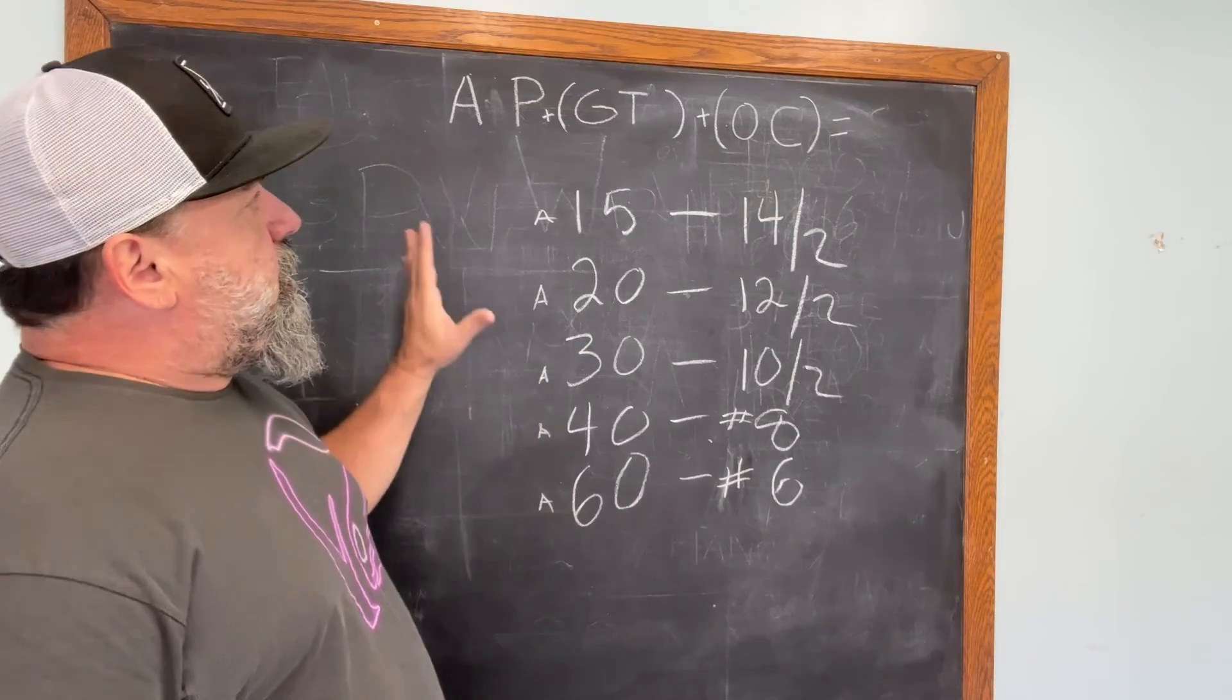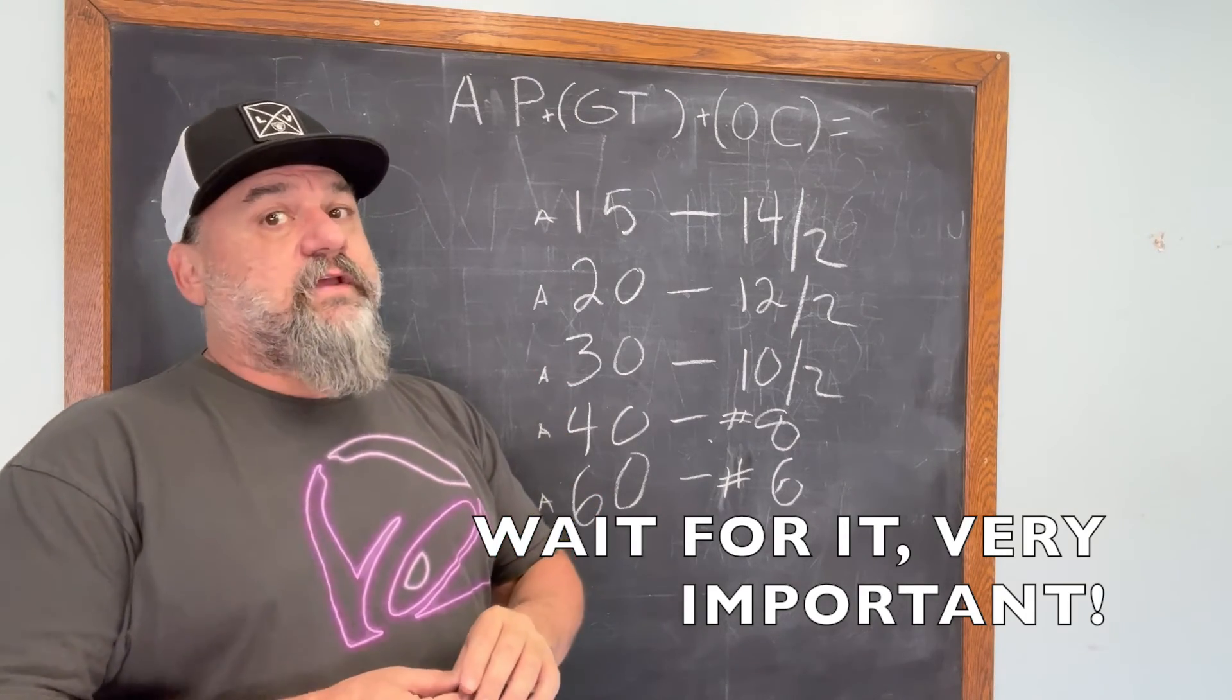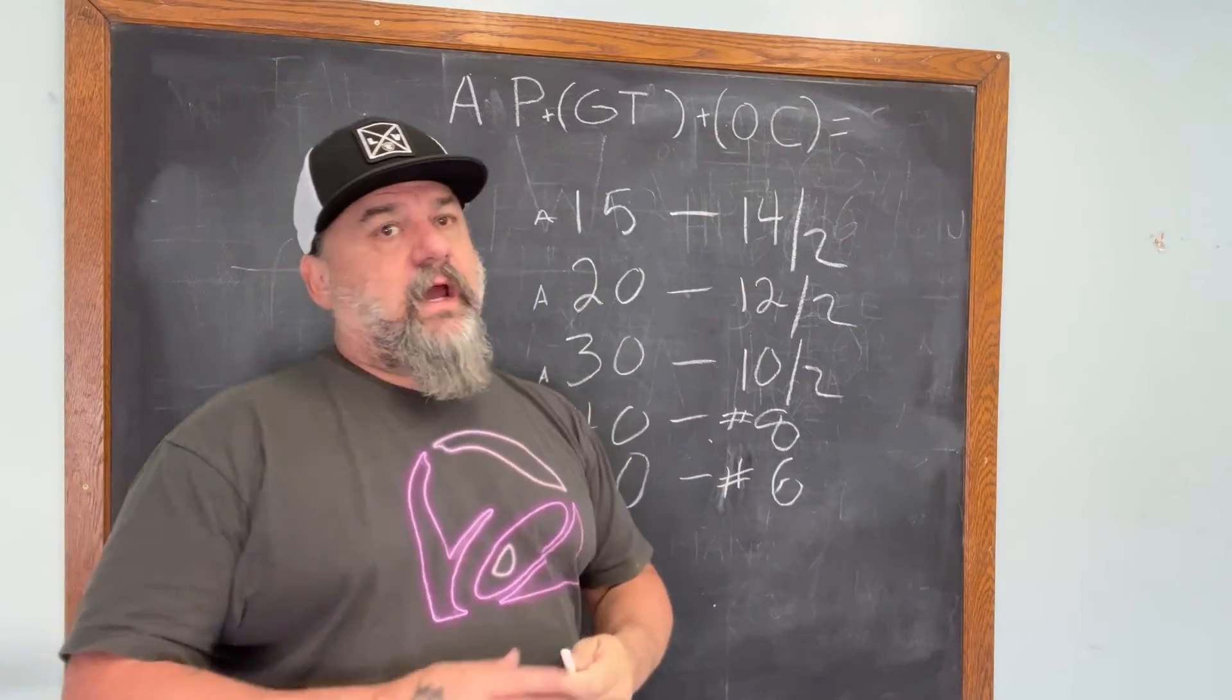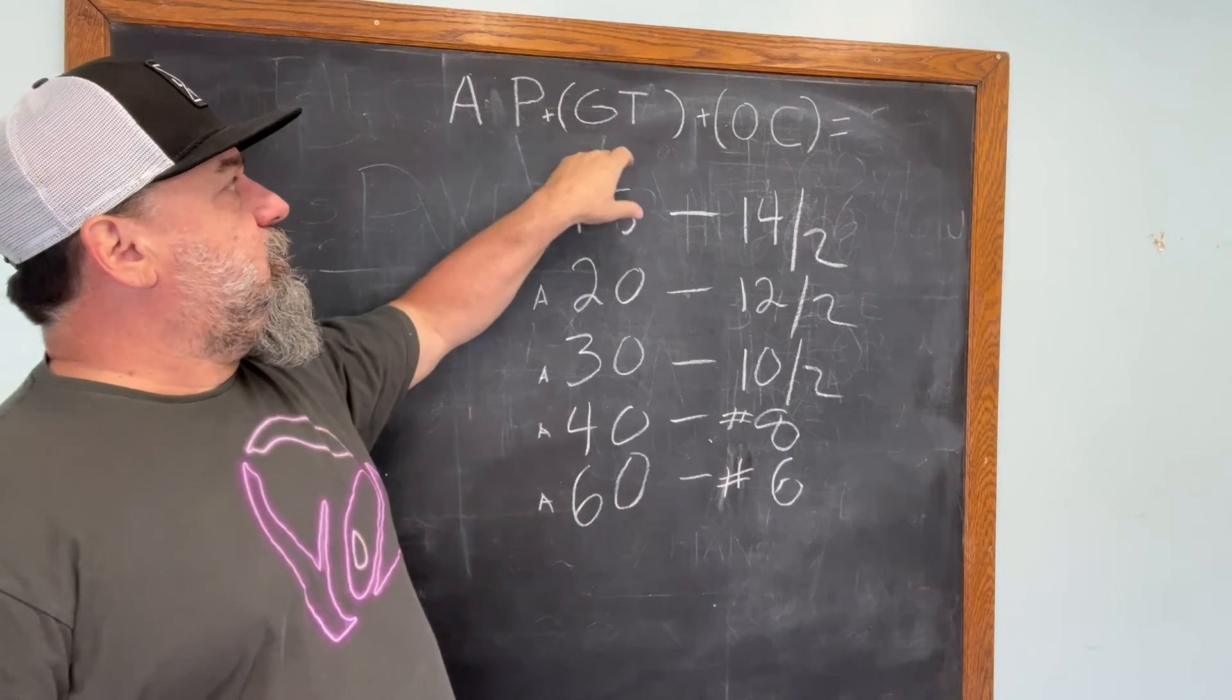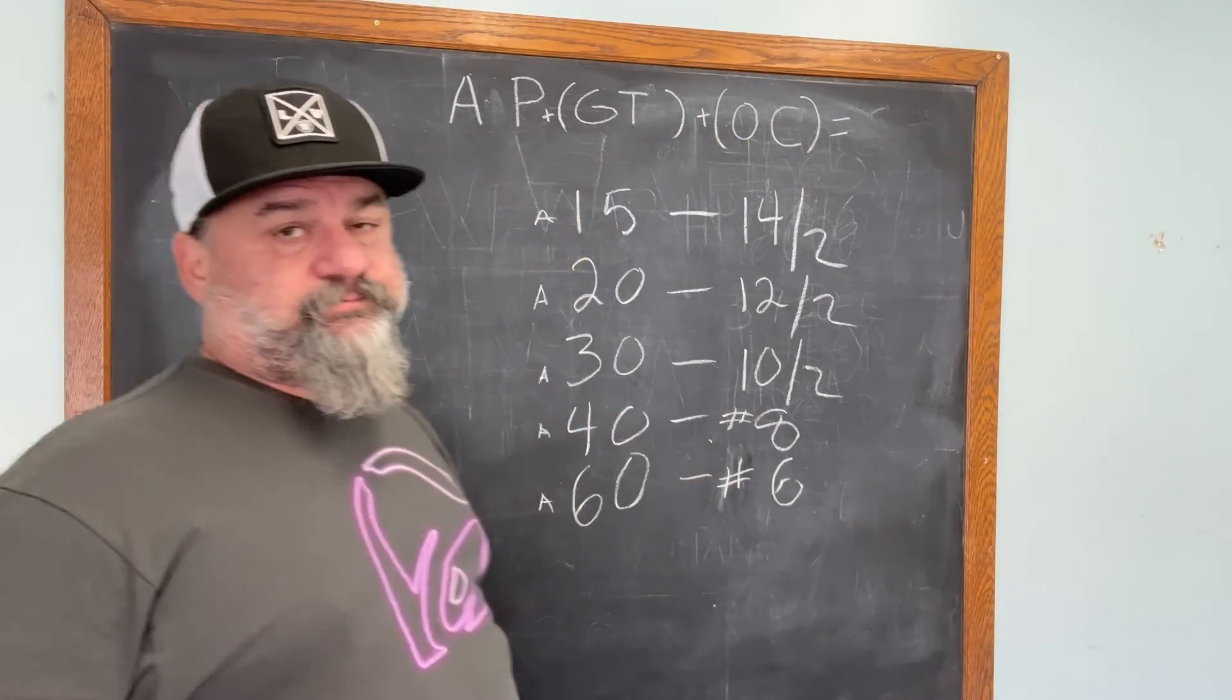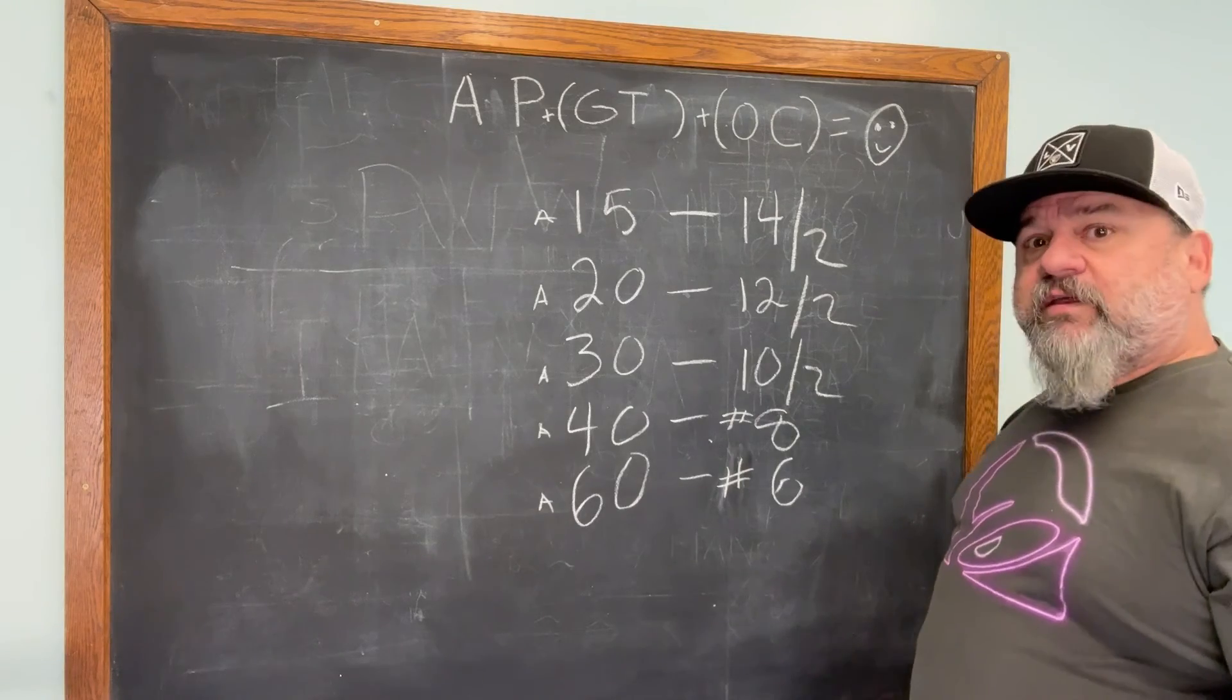And one thing, have you figured this out yet? This is something that I learned early on and it's the most important: AP plus GT plus OC. Al pastor plus a greasy taco shell, corn or flour, plus onions and cilantro equals happiness. So we can apply a beer to that as well.